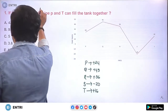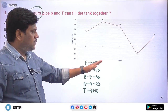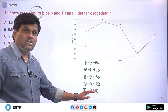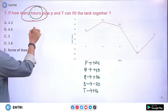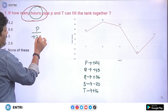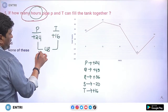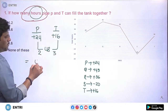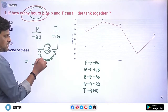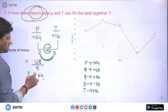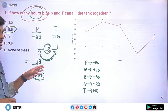Question 1: How many hours can pipe P and T together fill the tank? The parameter is hours. P takes 24 hours and T takes 16 hours; both are inlet pipes. LCM of 24 and 16 is 48. P's efficiency is 48/24 = 2 units per hour and T's efficiency is 48/16 = 3 units per hour. Together efficiency is 2 plus 3 equals 5. Time = 48 divided by 5 = 9.6 hours. Option B is the right answer.